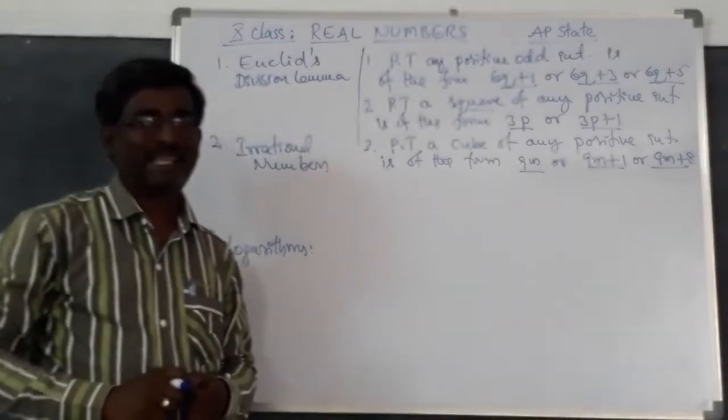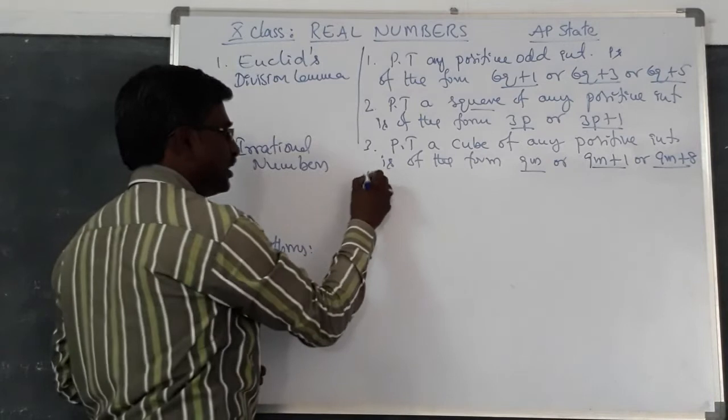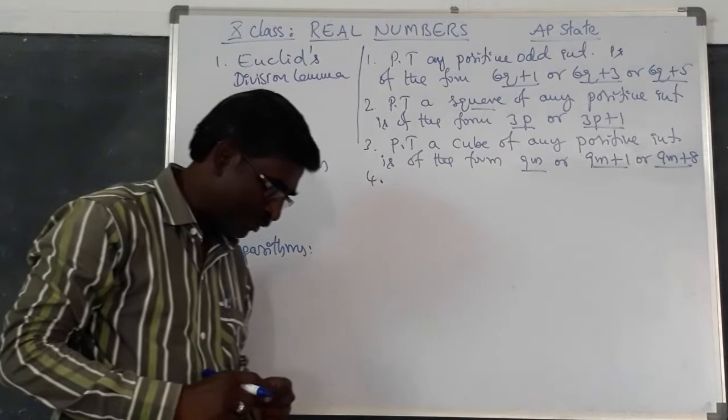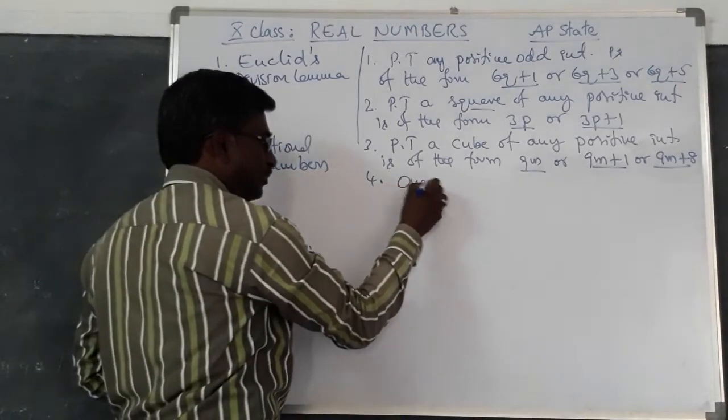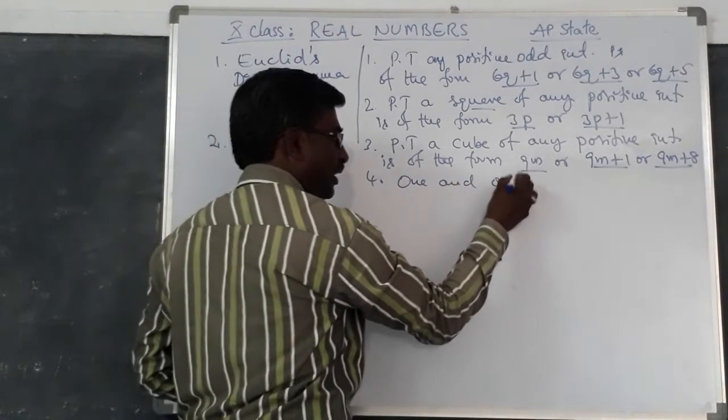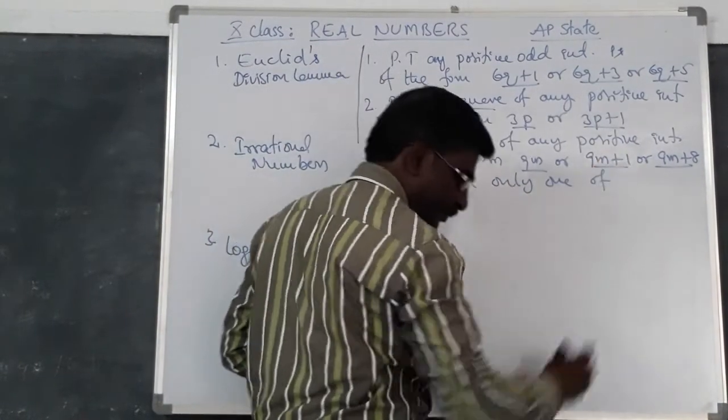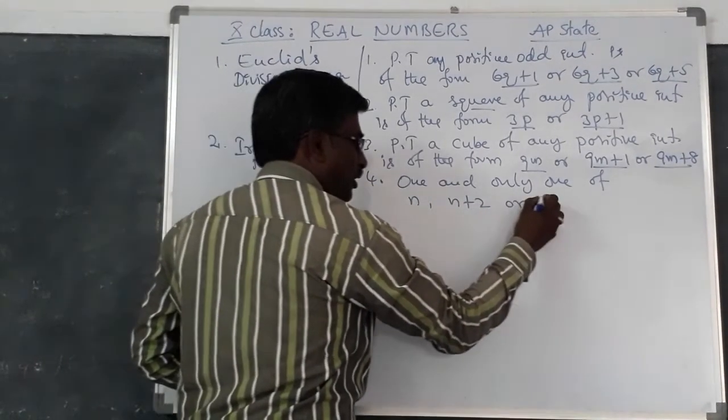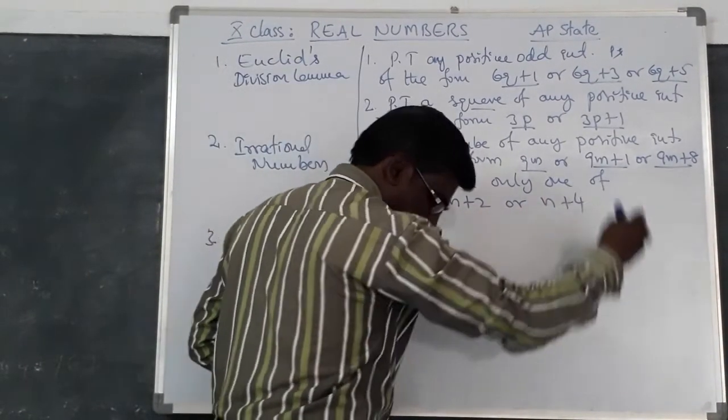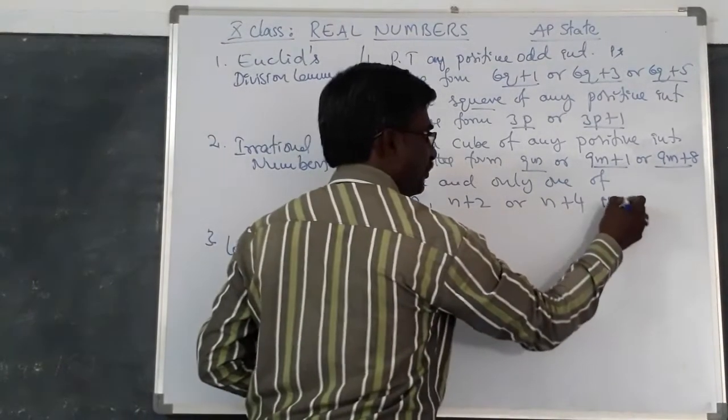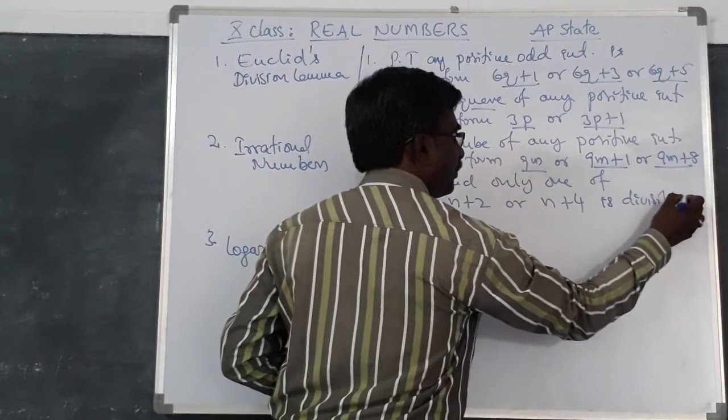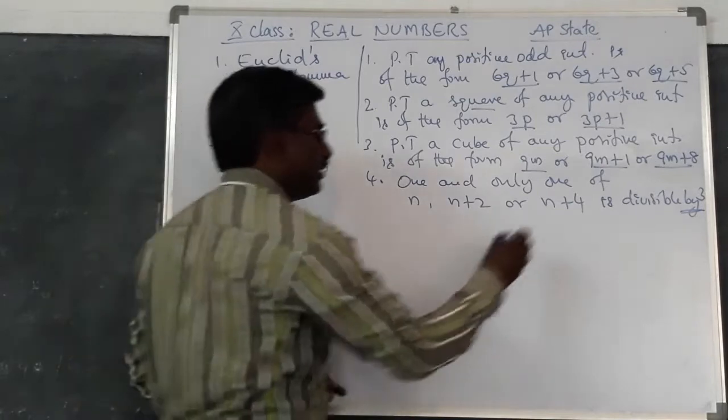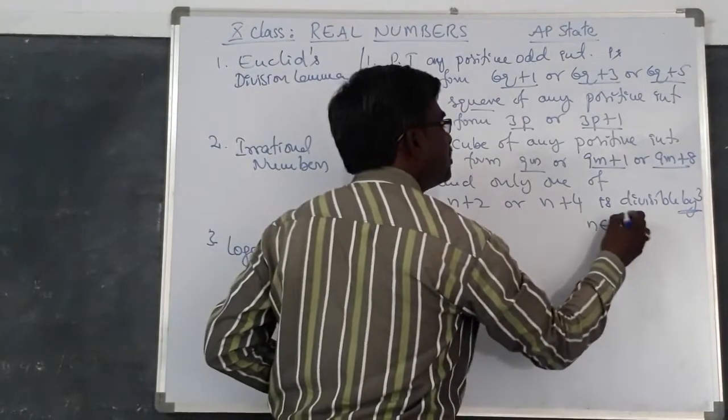Now, one more in addition to these, the problem is about a proof of one and only one of n, n plus 2, or n plus 4 is divisible by 3, where n is a positive integer.